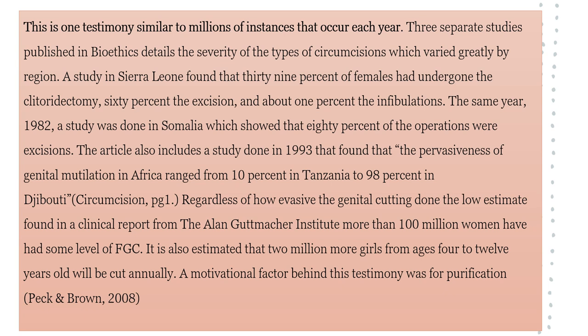A motivational factor behind this testimony was purification. In this paragraph, we notice two things: first, the main idea is at the top, and the writer uses information from the previous paragraph to transition into this one — showing there are many other such testimonies. Then the writer goes on to present statistical information and other kinds of supporting information to prove that there are many cases of female genital circumcision.